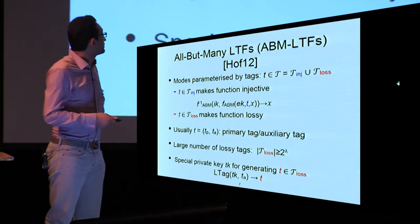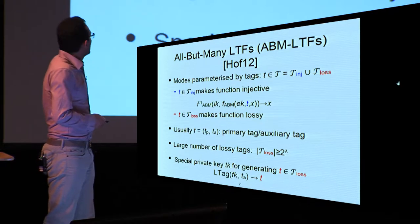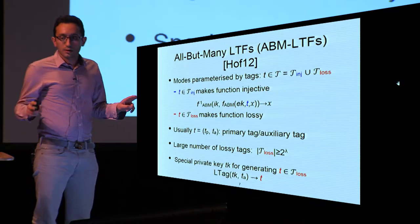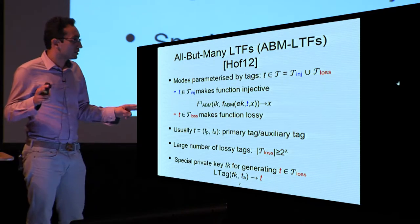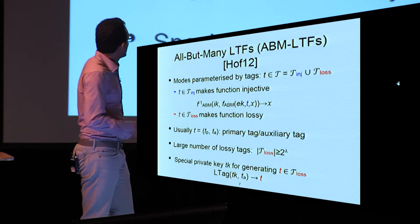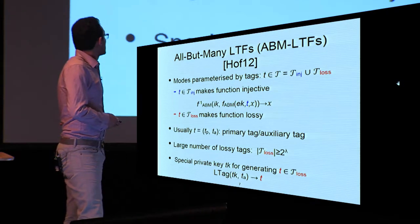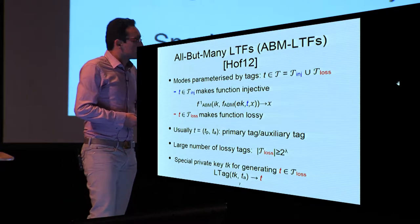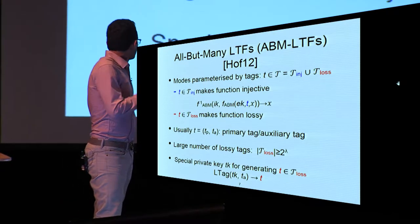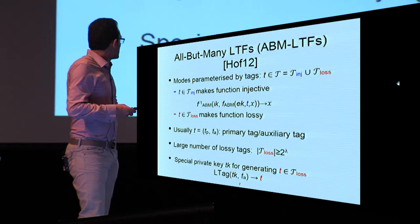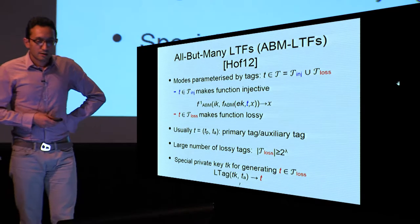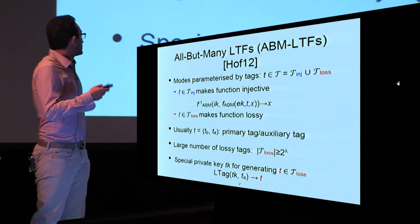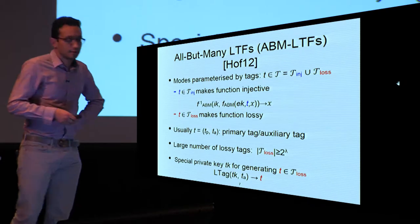If a tag belongs to the injective set, you can recover x using the inverse key. If the tag belongs to the lossy set, it makes the function lossy. Tags come in pairs: a primary part and an auxiliary part. One key property is that there must be a large, exponential number of lossy tags. There is also a special private tag key TK responsible for generating lossy tags from the auxiliary part and the tag key.